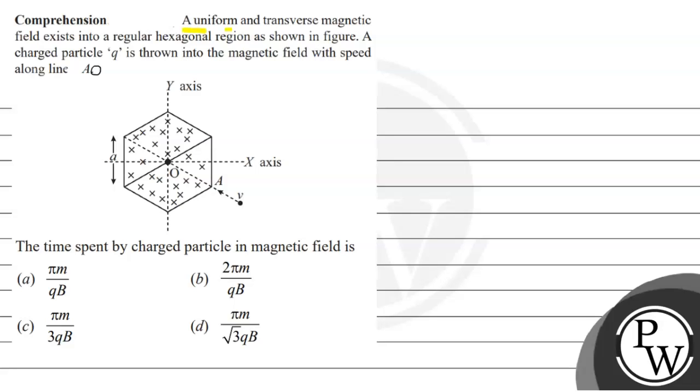Let us read this question. The question says that a uniform and transverse magnetic field exists into a regular hexagonal region as shown in the figure.